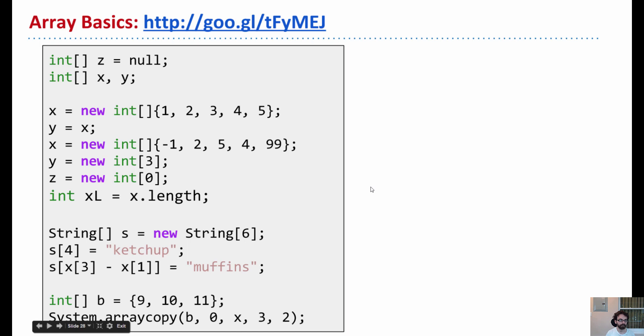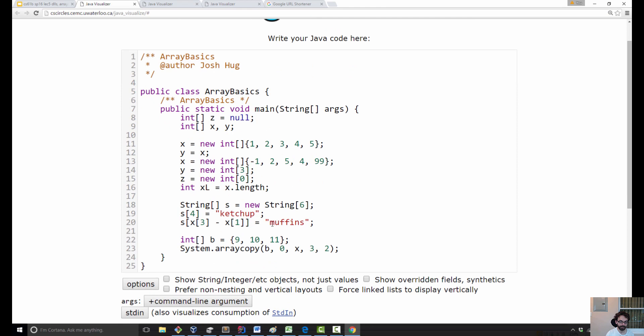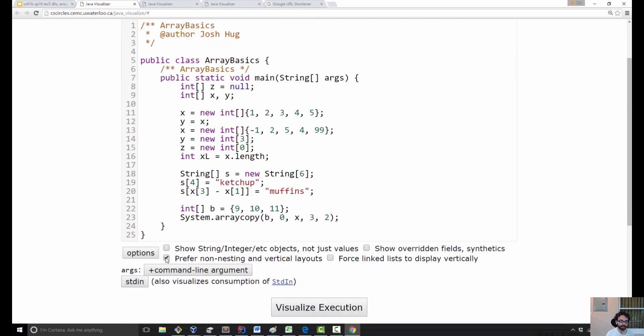So let's work through an example. So this is an example where I think that you, given what you saw in Project Zero and in this lecture, you could do every step of this and draw a nice box and pointer diagram, except maybe this last step here. So let's run through this example. And you can follow along and try and guess what's going to happen.